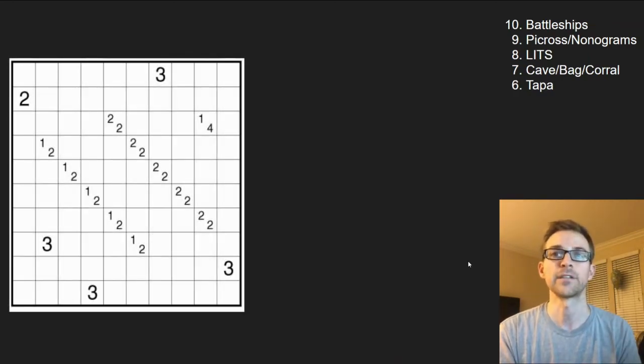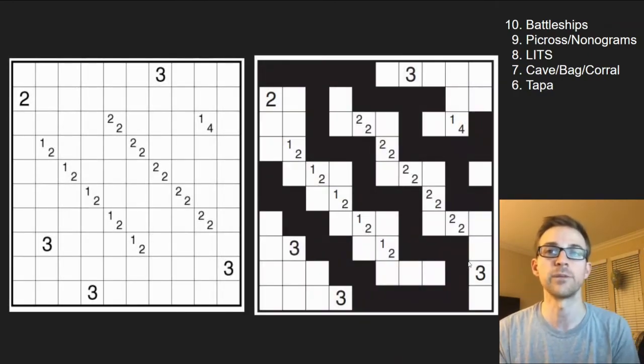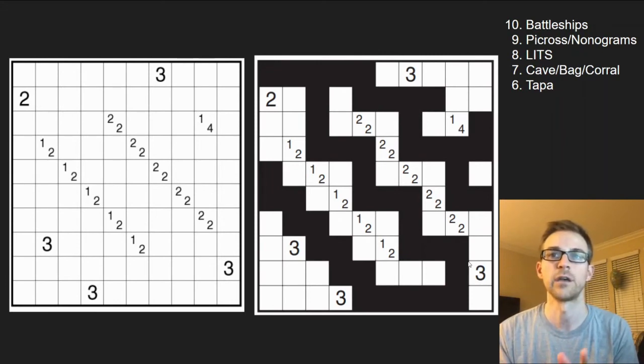Number six is Tapa. Tapa reminds me a lot of Minesweeper because the clues tell you how many adjacent cells are shaded, but they all have to be orthogonally connected to one another so you're creating kind of a path through the puzzle. What's fun about Tapa too is once you get good at the original puzzle, there's a ton of variants out there as well to mix up the rules for you.